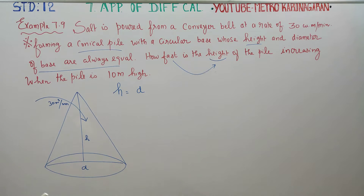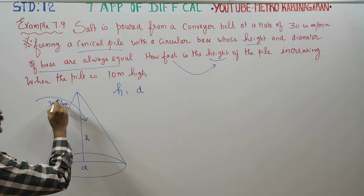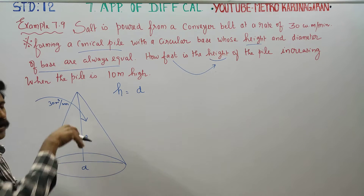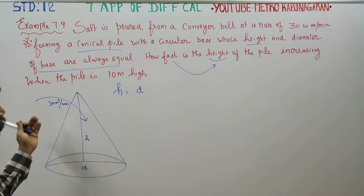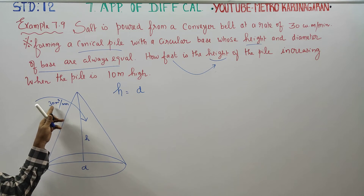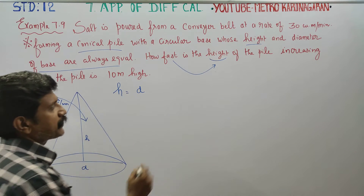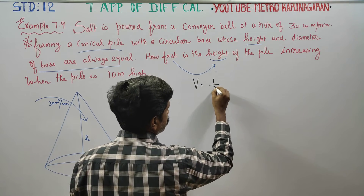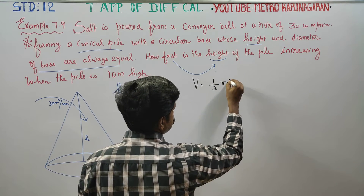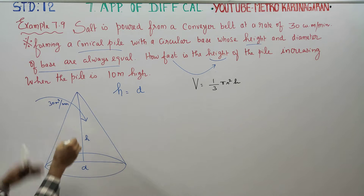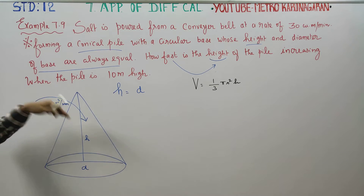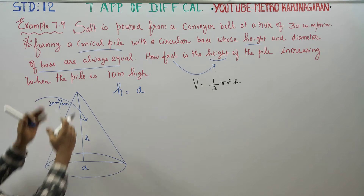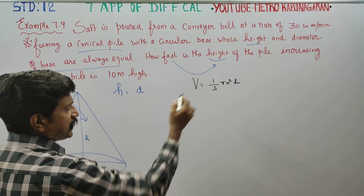Let us start the sum. First of all, the volume of salt is 30 cubic meters per minute. The volume of a cone is V = (1/3)π r² h.